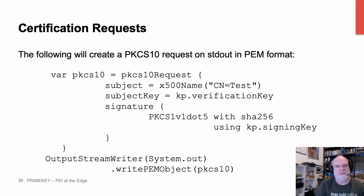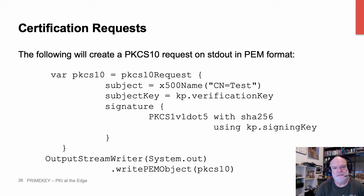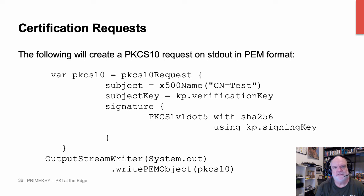Here's where it gets a bit more interesting. This is how we generate a PKCS10 certification request. KP is what we generated on the previous slide — that's our signing key. As it's a signing key, you can see that we have a verification key (the public key) and then KP.signingKey (the private key). Our signature is again defined in a declarative sense — it's PKCS1v1.5 with SHA-256 as a message digest.